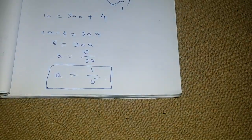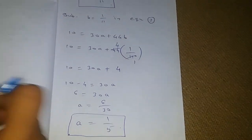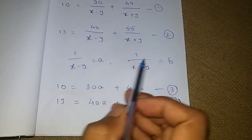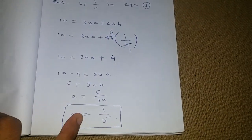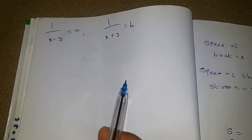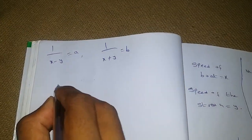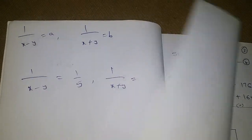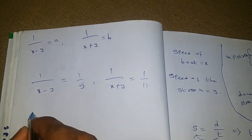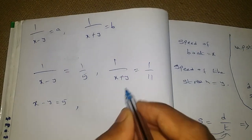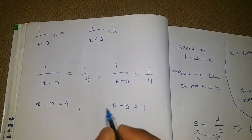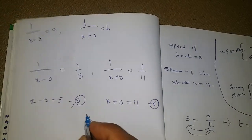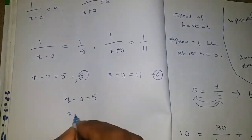We got a = 1/5 and b = 1/11. But a is 1/(x minus y) and b is 1/(x plus y). So substituting: 1/(x minus y) = 1/5, and 1/(x plus y) = 1/11. Reciprocating, we get x minus y = 5 (equation 5) and x plus y = 11 (equation 6). Now our work is to solve these two equations: x minus y = 5 and x plus y = 11.